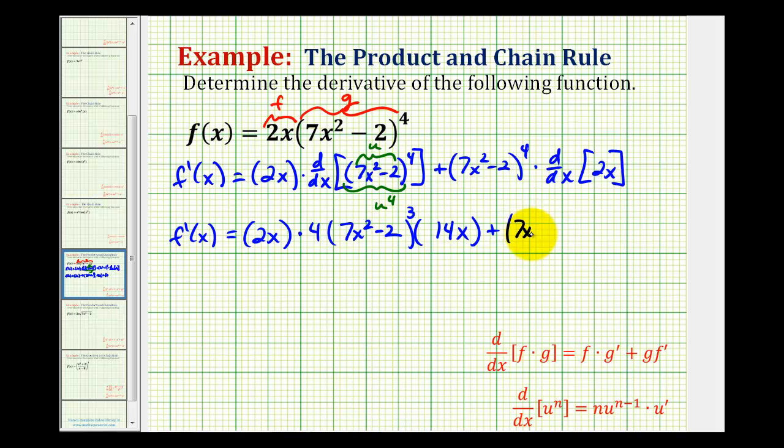Plus 7x squared minus 2 to the fourth times 2. Now that we have our derivative, we want to try to simplify this. So in this first product, we can multiply 2x, 4, and 14x. That's going to be 112x squared times the quantity 7x squared minus 2 to the third, plus the second product is just 2 times the quantity 7x squared minus 2 to the fourth power.